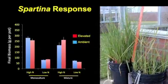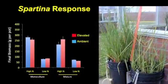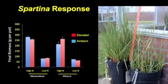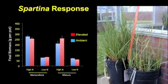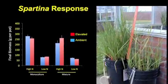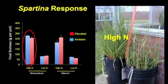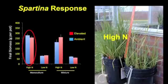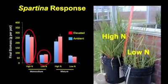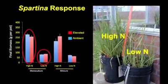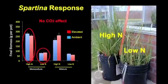The graph shows the final biomass of the C4 grass Spartina in grams per mesocosm, and a photograph was taken just before the end of the experiment. The data and photograph clearly show a strong response to higher nitrogen, which caused higher stem density and taller plants compared to low nitrogen. There was no effect of CO2 on Spartina, as predicted.